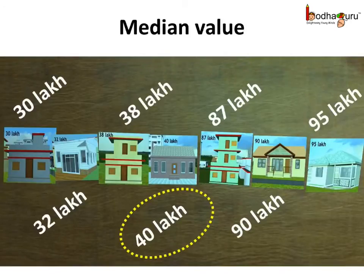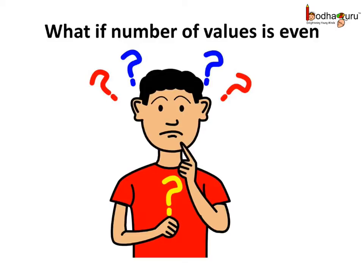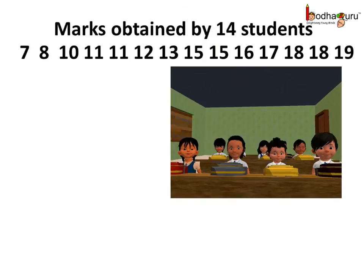Finally he chose the 40 lakh house, which was the median of the ordered list. So now you know what the median value is — it is simply the middle value of the ordered list, like the house worth 40 lakhs here. You may wonder: what if the number of values is even? Let us understand this with an example. The median is used to divide the list into two equal parts.